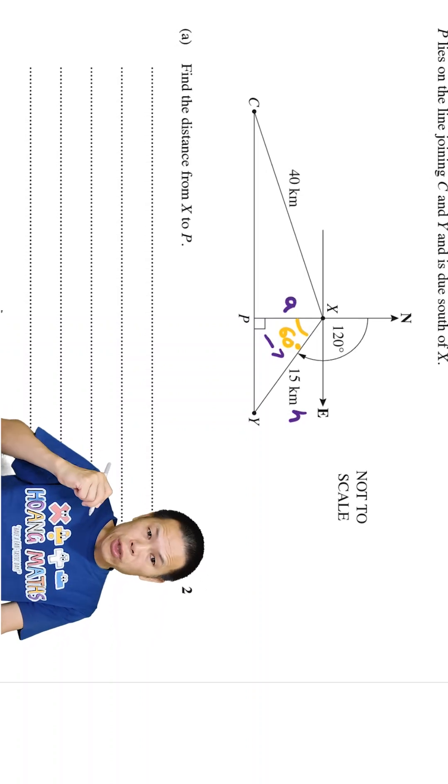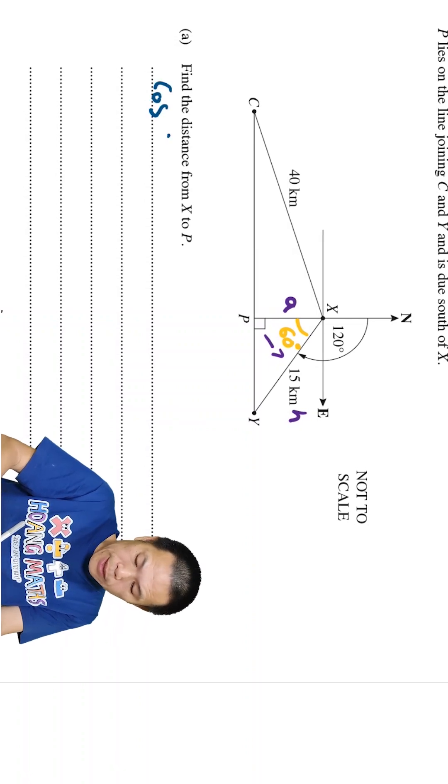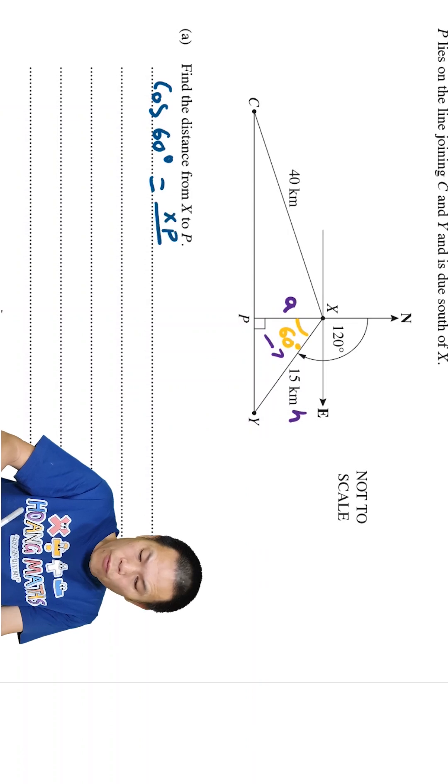So we have adjacent, we have hypotenuse, so we use CAH. So we go cos of 60 degrees equals adjacent, that is xp over the hypotenuse, which is 15.